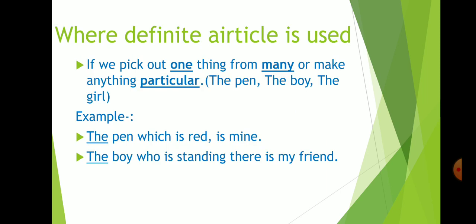Next, where definite articles is used. If we pick out one thing from many or make anything particular, like the pen, the boy, the girl. For example, the pen which is red, is mine. The boy who is standing there is my friend.